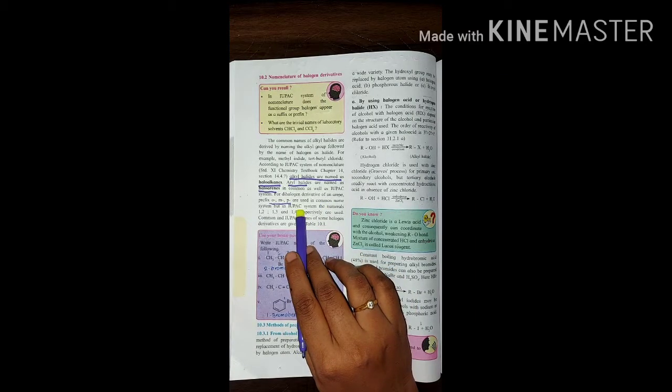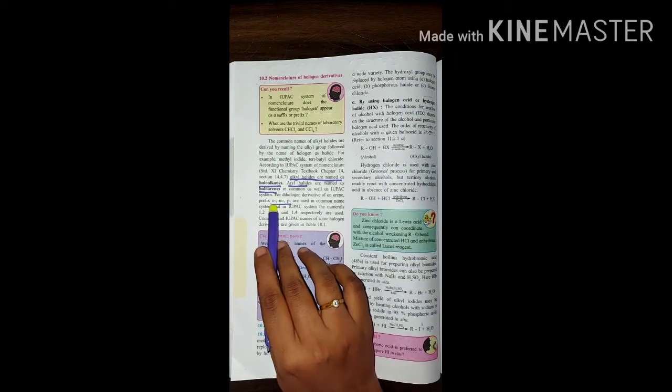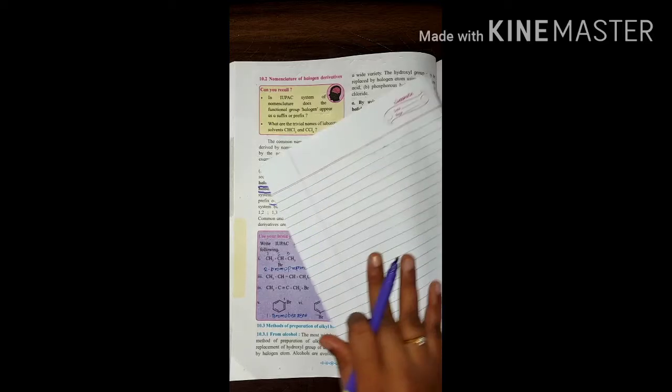And in IUPAC names, the IUPAC names use 1,2; 1,3; 1,4 instead of ortho-meta-para respectively. I will give you an example.